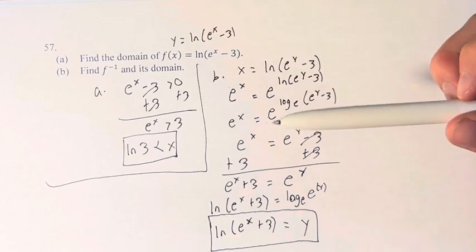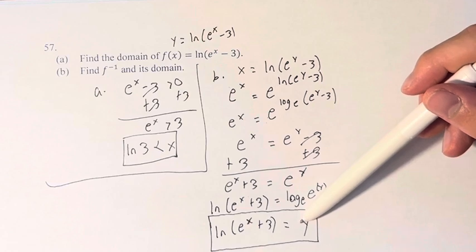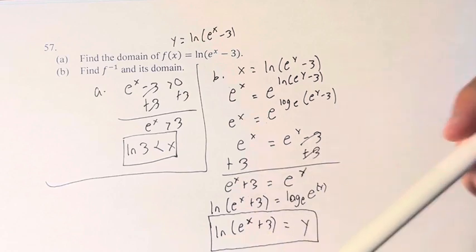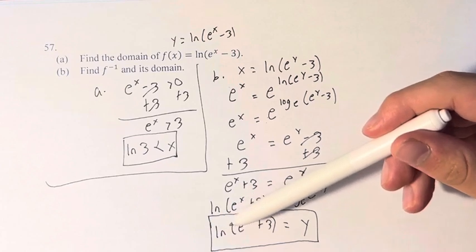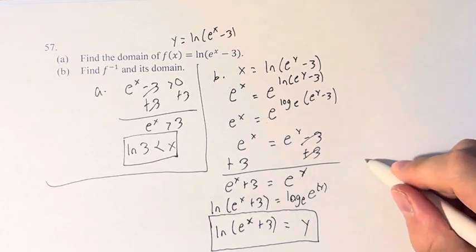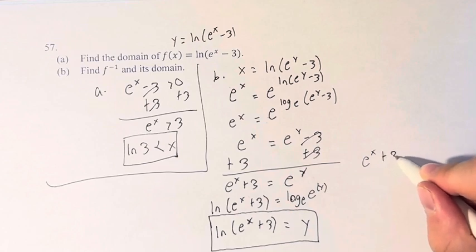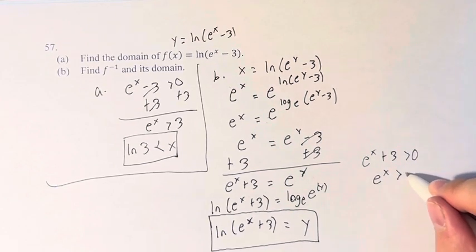And we're asked, what is the domain of this inverse? And again, the only restriction on this is that what's inside the natural log has to be greater than 0. So e^x + 3 has to be greater than 0. Therefore, e^x has to be greater than negative 3.